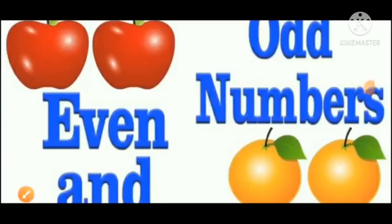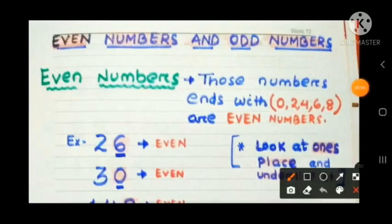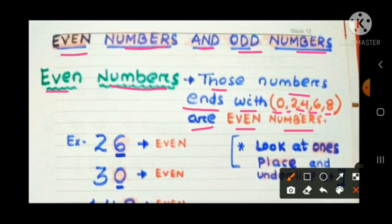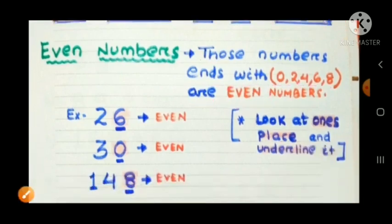Today we will learn about even and odd numbers. Those numbers that end with 0, 2, 4, 6, or 8 are even numbers. We have to check the ones place — if any of the digits 0, 2, 4, 6, or 8 is present in the ones place, that number belongs to the even numbers group.